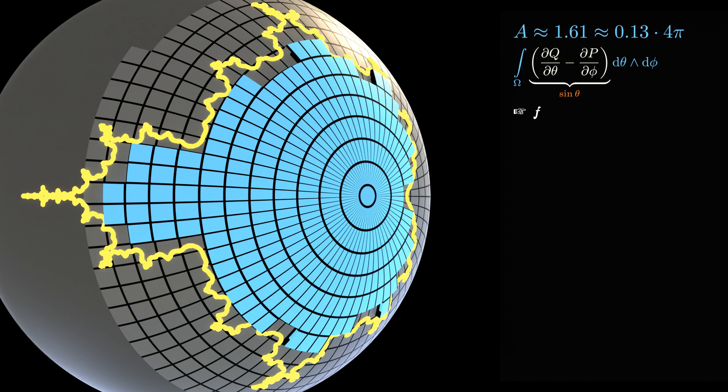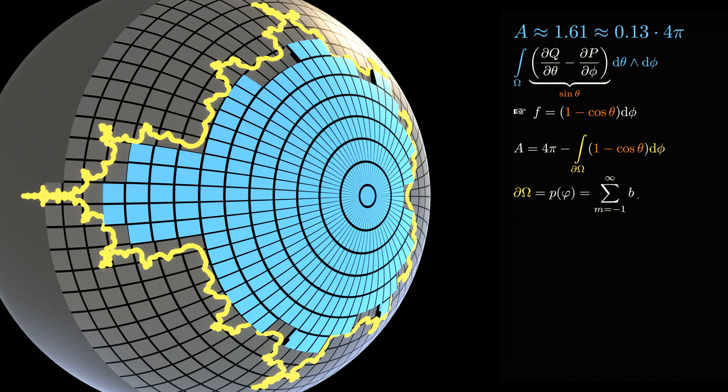Now we have to remember that our curve is the image of a circle that was first mapped by a polynomial and then projected stereographically.